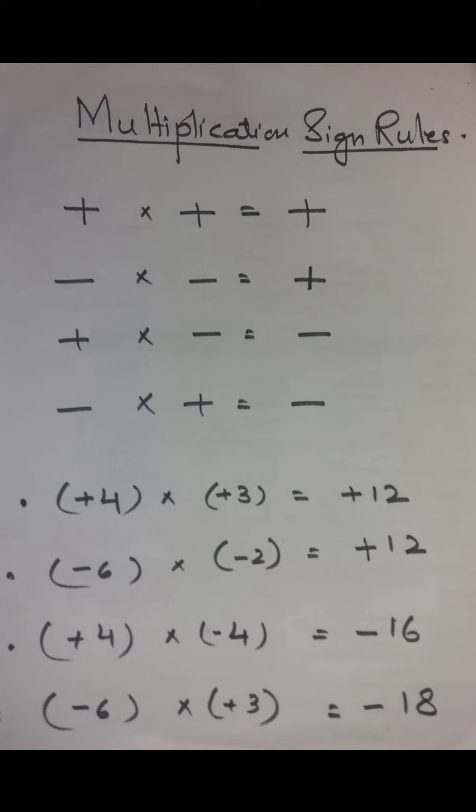Example: plus 4 multiply by plus 3 — answer is in plus sign, 4 times 3 is 12, so plus 12. Minus 6 multiply by minus 2 — answer is in plus sign, 6 times 2 is 12, so plus 12.